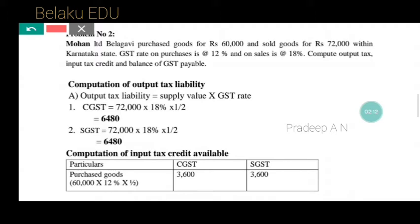Mohan Limited Belgavi purchased goods and sold goods within Karnataka. So goods and services are both supplied within the state. The tax which is attracted under GST for intra-state supply is CGST and SGST.